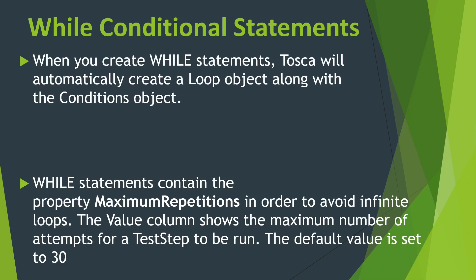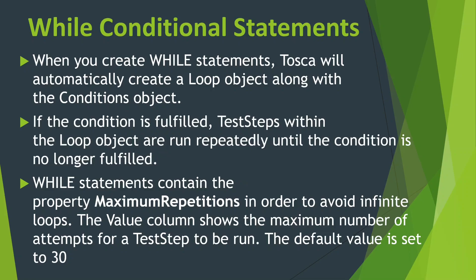So, the while conditional statement. When you create while statements, Tosca will automatically create two objects: one is the loop object and the other is the conditions object. If the condition is fulfilled, test steps within the loop object are run repeatedly until the condition is no longer fulfilled. While statements contain a property called maximum repetitions in order to avoid infinite loops.